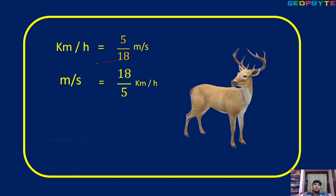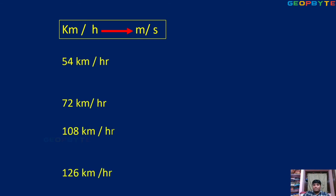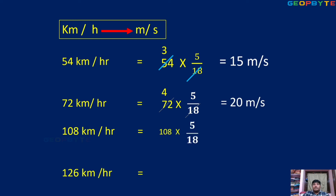Meter per second converted back is 18 by 5 kilometer per hour. Examples — converting kilometers per hour into meter per second: 54 km/h into 5/18 — simplify: 18 threes cancel, 5 threes give 15 — so 15 m/s. 72 km/h: 72 into 5/18 — simplify: 4 cancels with 18 giving 4 and 20 — answer is 20 m/s. 126 km/h into 5/18 — simplify — gives 35 meter per second.